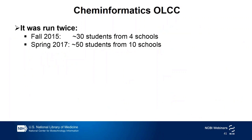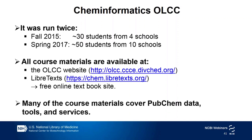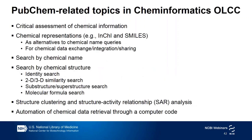We ran this course twice. In fall 2015, we had about 30 students from four schools. And in spring 2017, there were about 50 students from 10 schools. All the course materials developed during this course are available at the OSCC website and LibreTexts, so if anybody wants to use these materials for their own course, they can use them for free. Many of these course materials cover PubChem data, tools, and services. Here is a quick summary of PubChem-related topics covered in the ChemInformatics OSCC — basically, it includes everything I mentioned today and more.